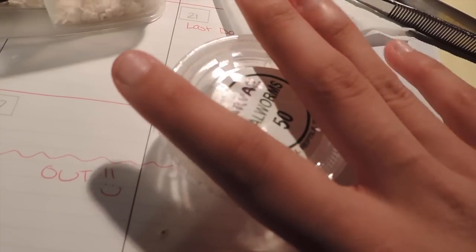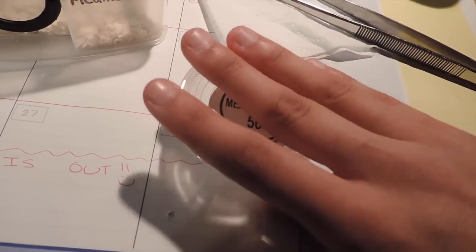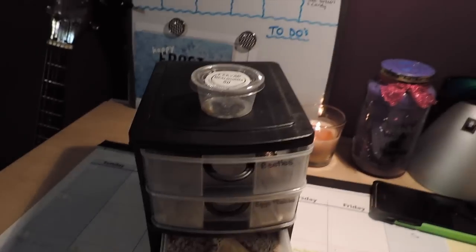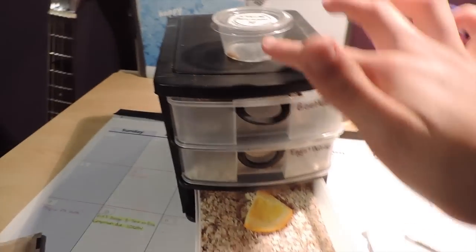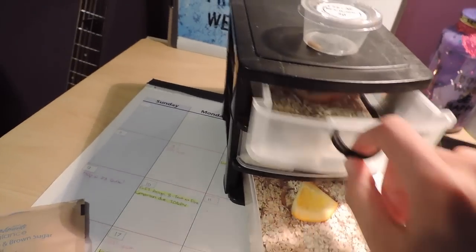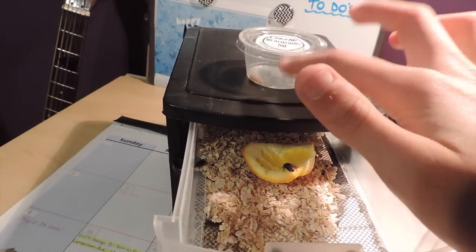Then take your larva, pop it in there, put the lid on, and then just stick that on the top of your container here. Once you see they're in the beetle stage, then you take them out of the little container and stick them in here, and the cycle just keeps going.